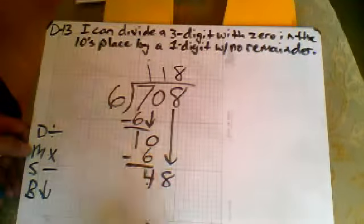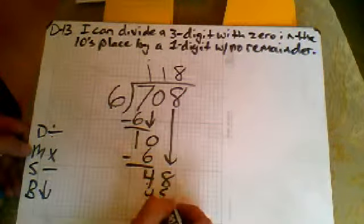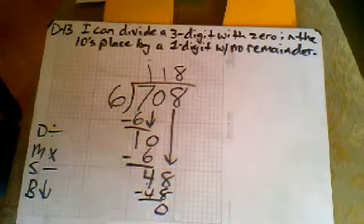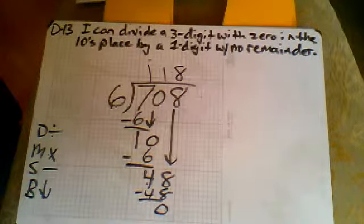Multiply my eight times my six, get a forty-eight. Subtract, zero. Nothing to bring down, no remainder. One hundred and eighteen to be the answer.